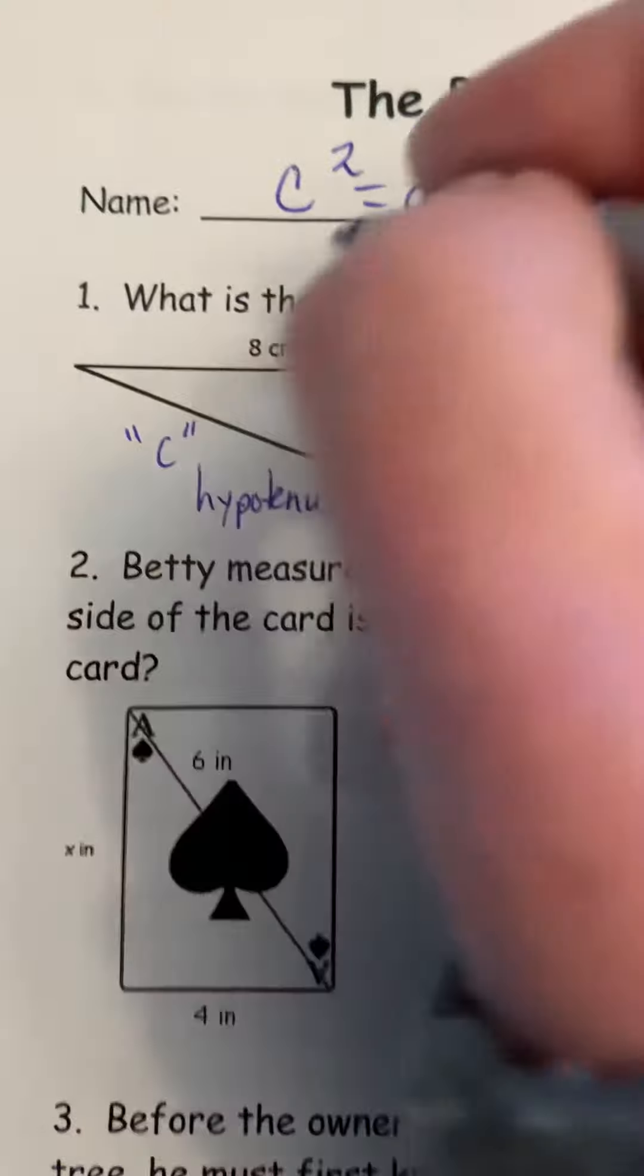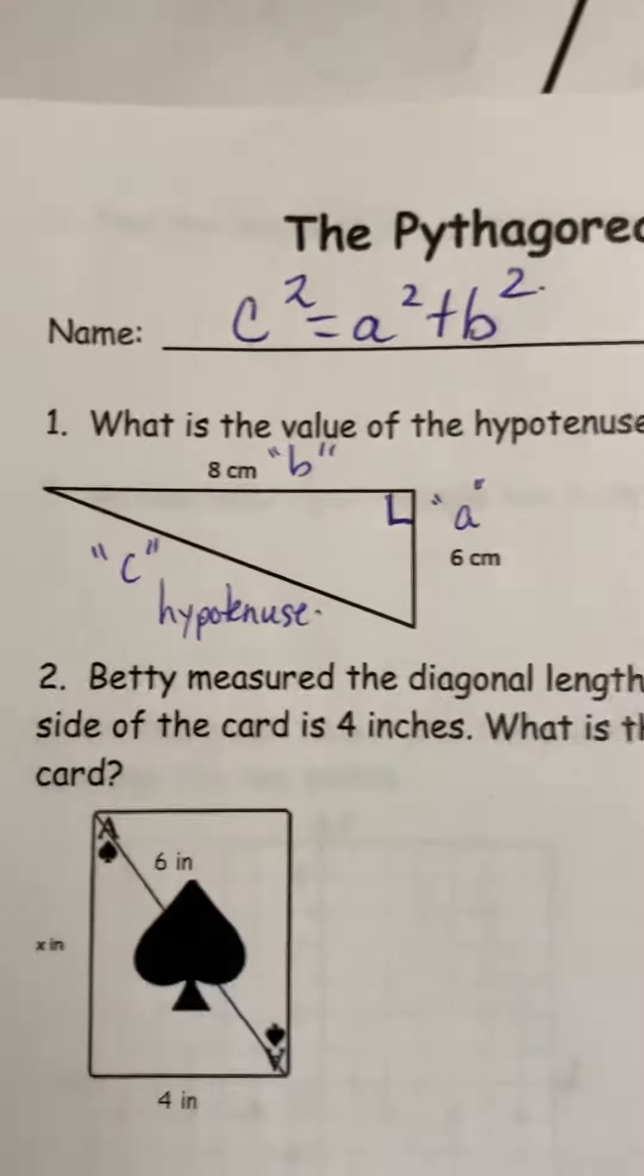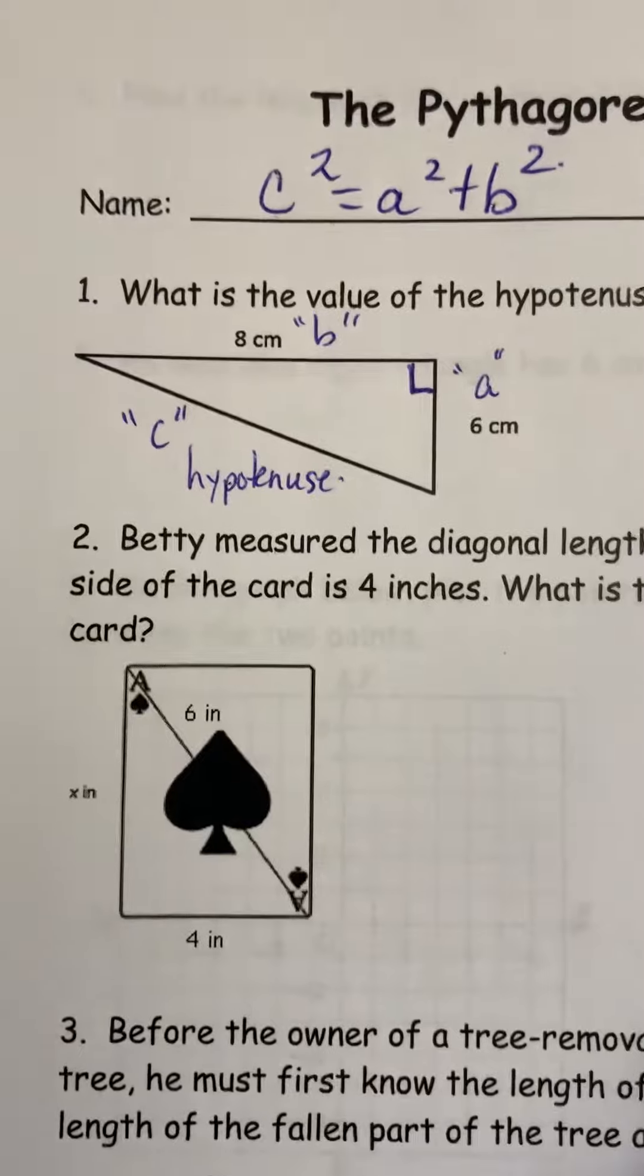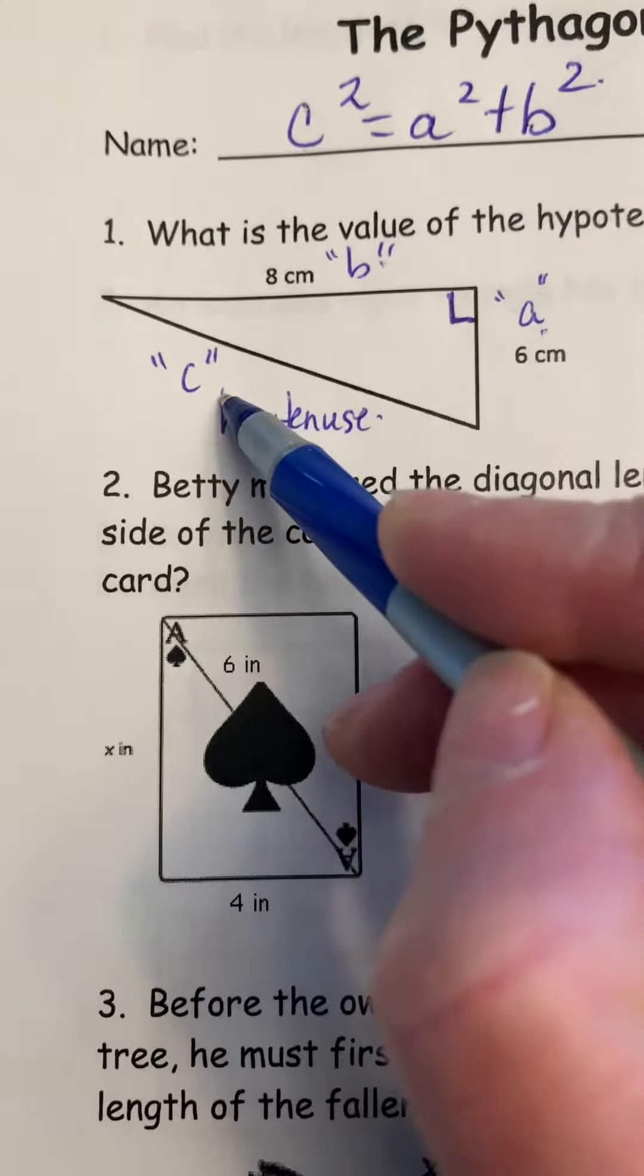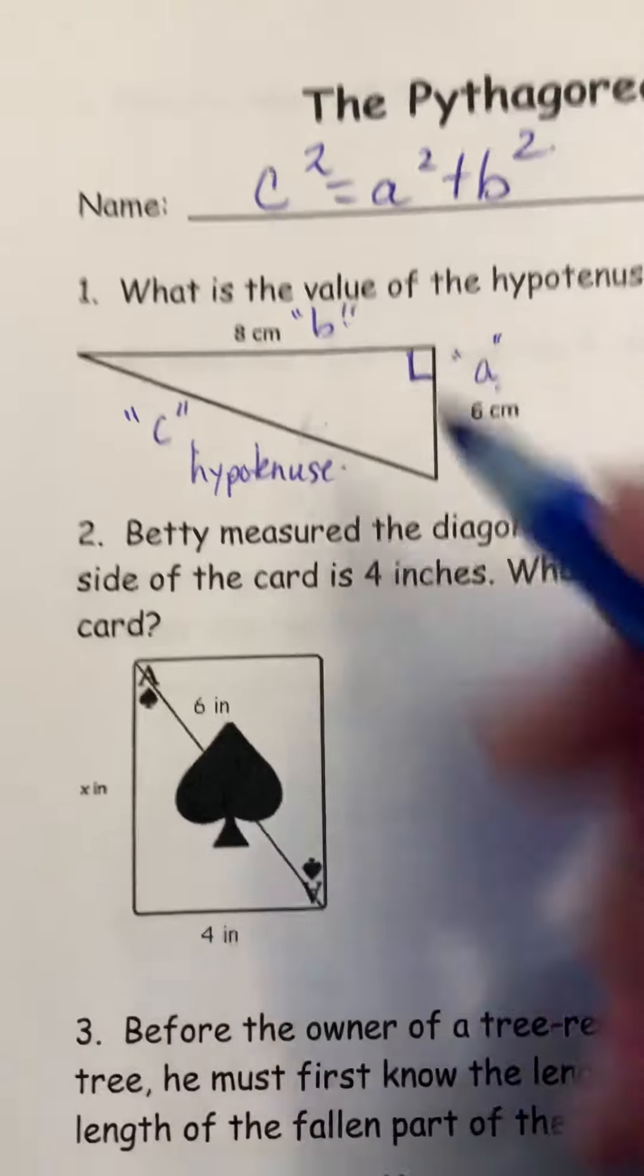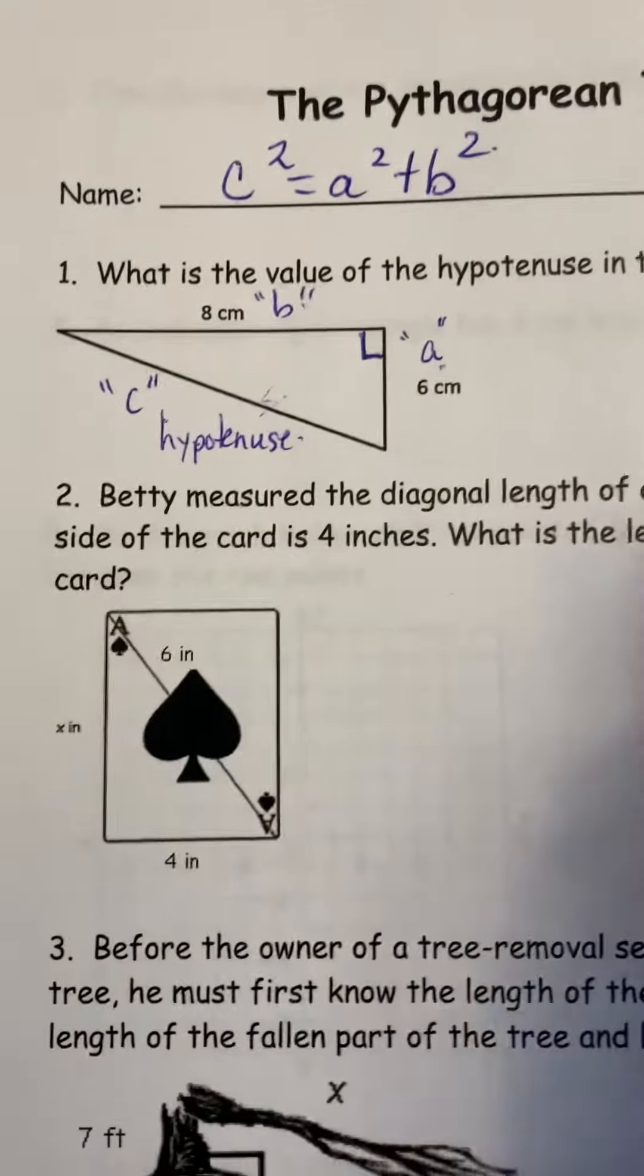And these are the legs, and so you name one of them A and one of them B. Remember we talked about this when we looked at the Pythagorean theorem review before, that these two are actually interchangeable. So as long as you have the hypotenuse labeled properly across from the right angle, you're going to be good to go.